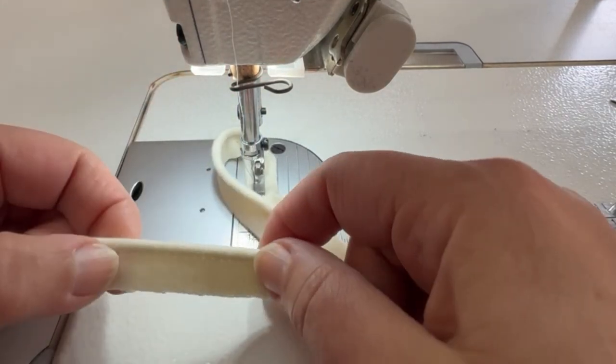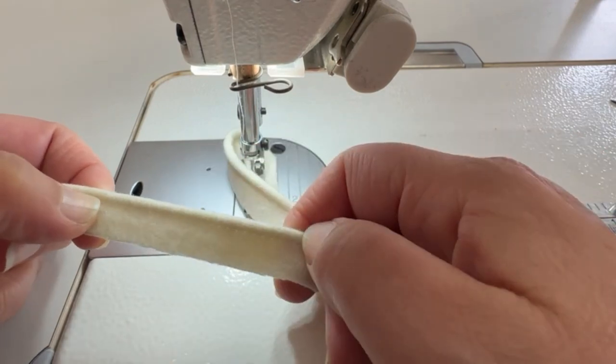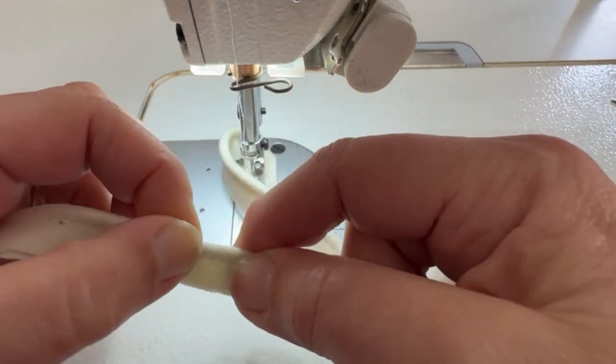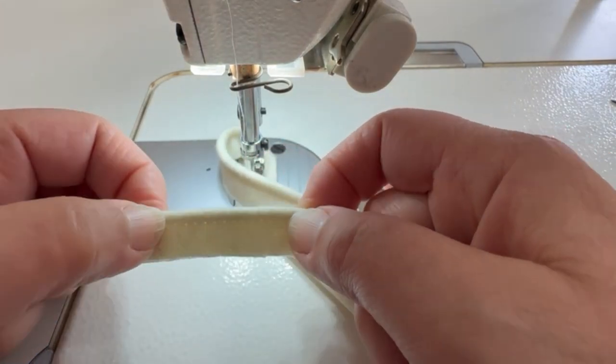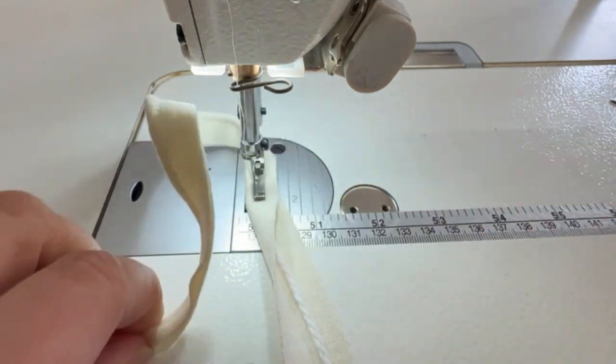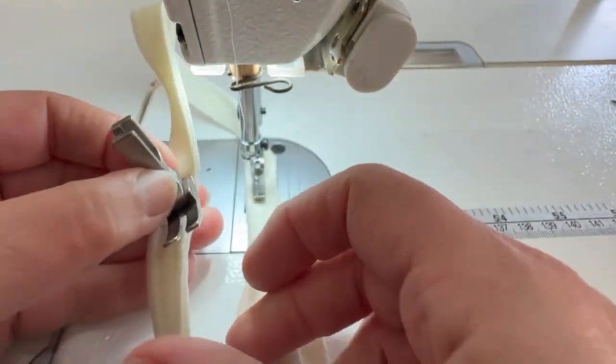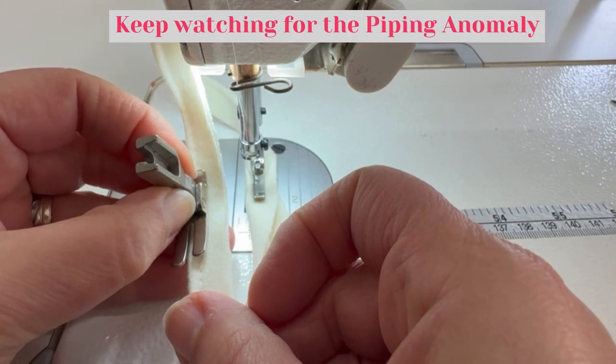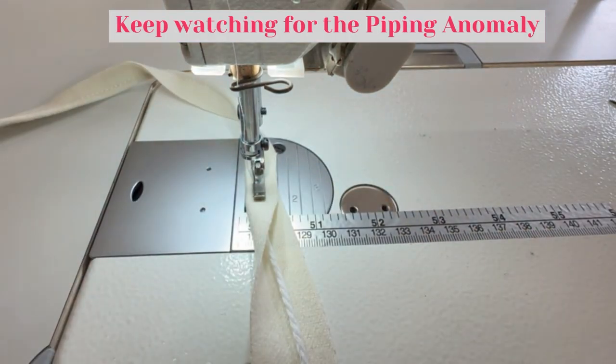When you sew this onto another garment, you need to use the one-sided foot again. What you don't want to do is squash that piping. If you try and do that with a normal foot, standard foot, it would just squash your piping. Thank you for watching. Hope you've enjoyed. Bye-bye.